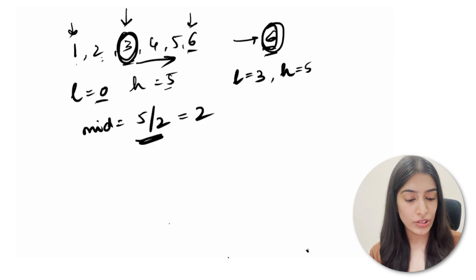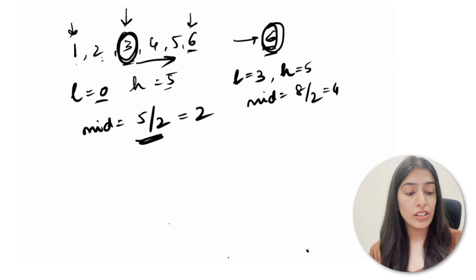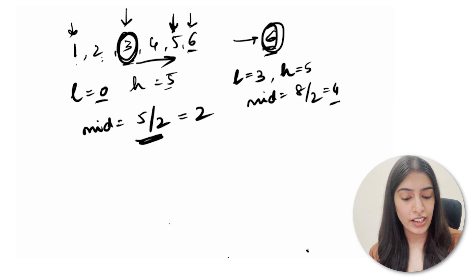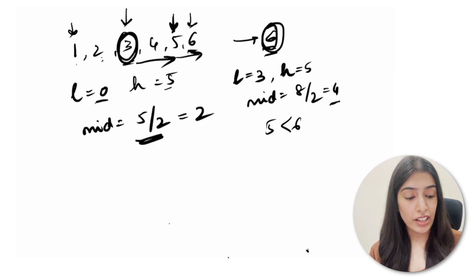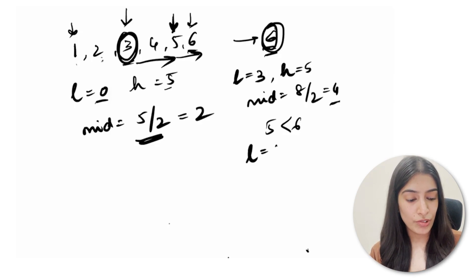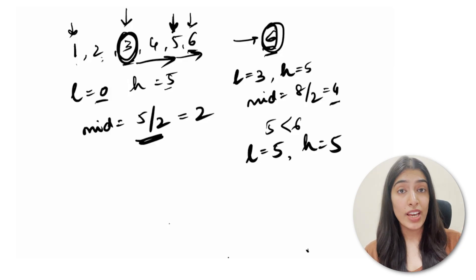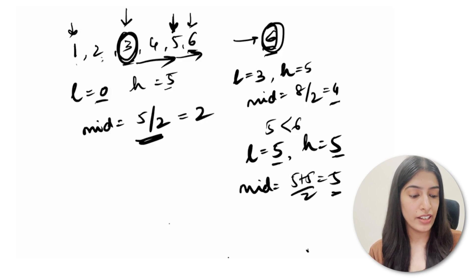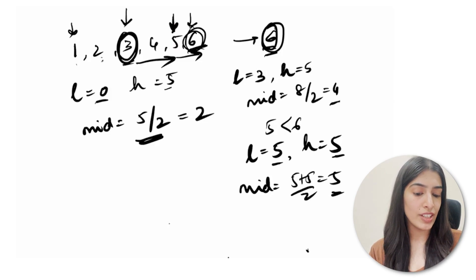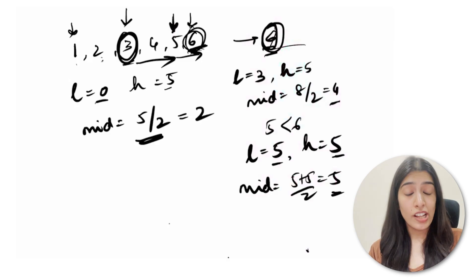Now l=3, h=5 — still inside the loop. Mid = (3+5)/2 = 4. Element at index 4 is 5. Since 5 is less than 6, again we move l to mid+1 = 5. Now l=5, h=5 — still equal, so we enter the loop. Mid = (5+5)/2 = 5. Element at index 5 is 6 — we found it, so we return 1.